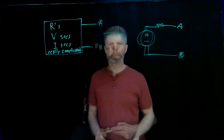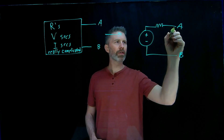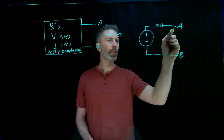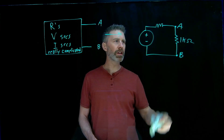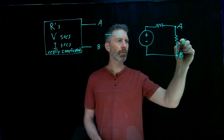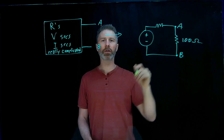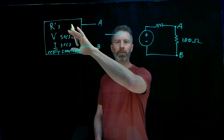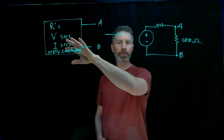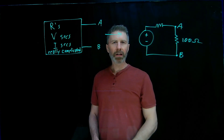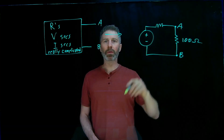Those two points are the same. The real power of the Thevenin equivalent is I can take a really complicated circuit, reduce it down to something simple, and then figure out the voltage and current across a load. If I have a load that's 1 kilohm and then that load changes to 100 ohms, I don't have to do much re-evaluation — it's a very simple circuit to analyze. Whereas the original circuit may have a really complicated arrangement of resistors and multiple voltage and current sources. With the Thevenin equivalent, it's basically just a voltage divider network.